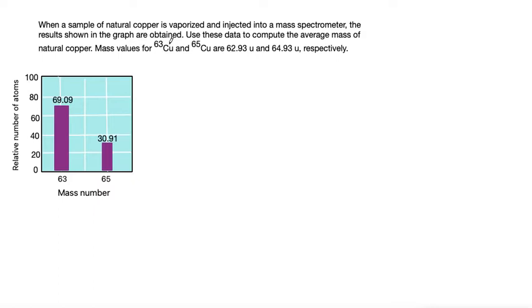Mass values for copper-63 and copper-65 are 62.93 u and 64.93 u respectively. This problem is asking us to compute average mass of natural copper and it gives us mass values for two different isotopes.